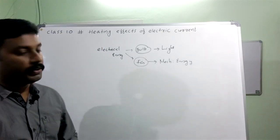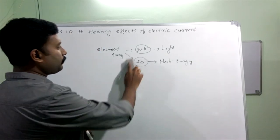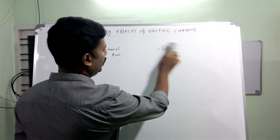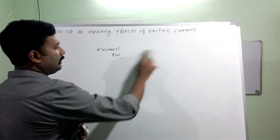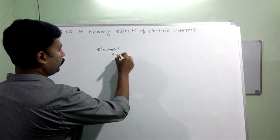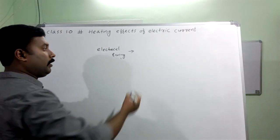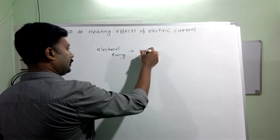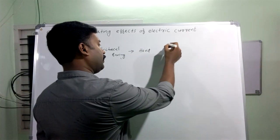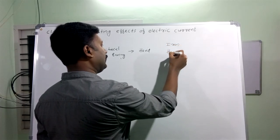This is the heating effect of electric current. Electric energy can be converted to heat energy — that is the heating effect. Electric energy can also be converted to heat energy and magnetic energy. We use an electric iron box and a heater as examples.